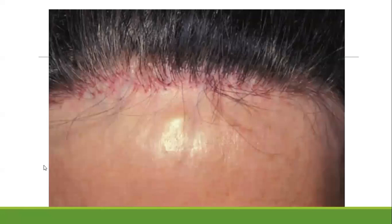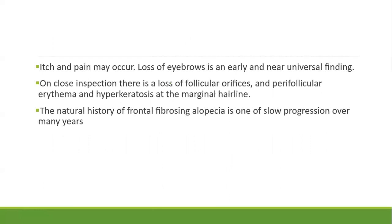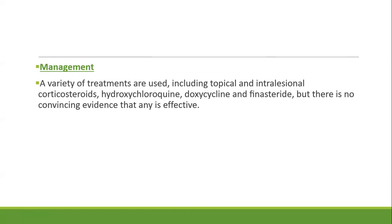Progressive straight recession of the frontal hairline with scarring is seen. Itching and pain occur, and loss of eyebrows is an early and universal finding. On close inspection there is loss of follicular orifices, perifollicular erythema, and hyperkeratosis at the marginal hairline. The natural history is one of slow progression over many years. Management includes topical and intralesional corticosteroids, hydroxychloroquine, doxycycline, and finasteride, but there is no convincing evidence that any of these is effective.